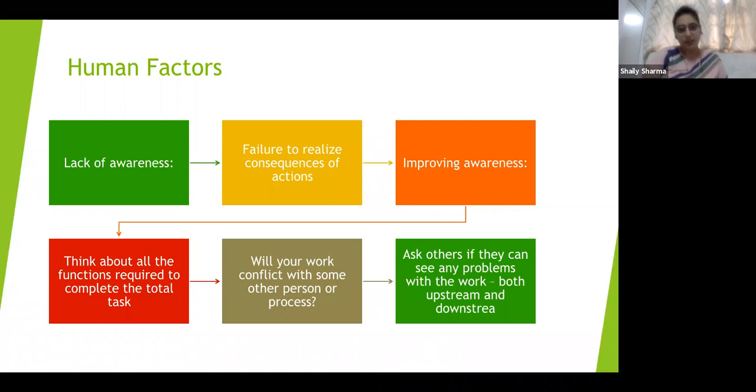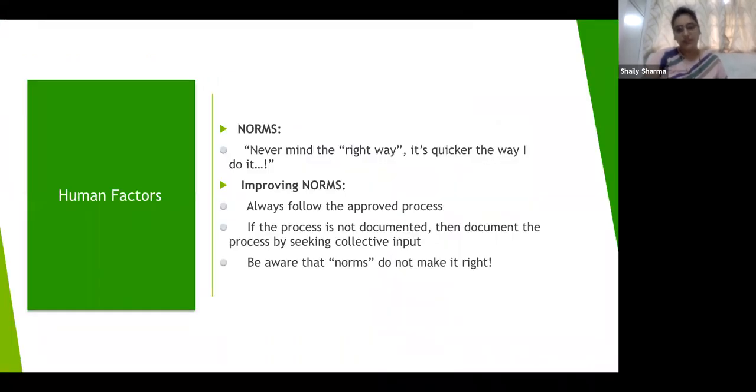Human factor, lack of awareness. Failure to realize consequences of actions. Improving awareness: think about all the functions required to complete the total task. Will your work conflict with some other person or process? These all go interchanged. These all are interconnected. Human factor norms, the 12th point. Never mind the right way, it's quicker this way, do it. How you can improve norms: always follow the approved procedure. If you are following unapproved procedure, it is illegal. Normally, if you are following the approved procedure, there are no chances it will go wrong. If the process is not documented, then document it. Be aware that norms do not make it right.